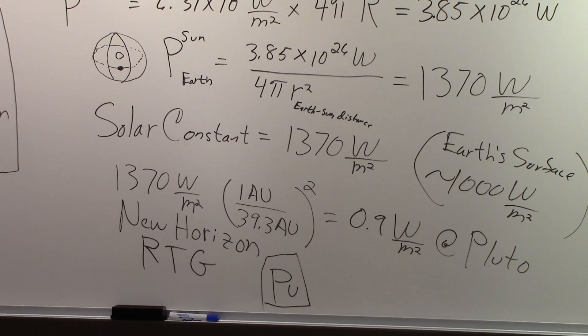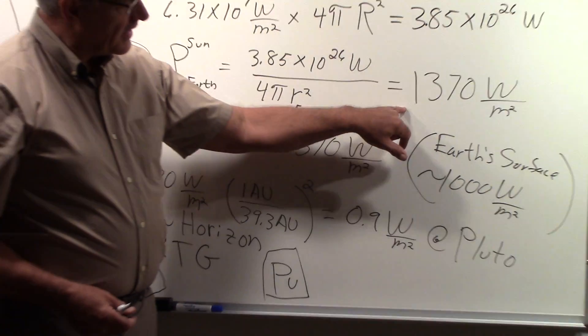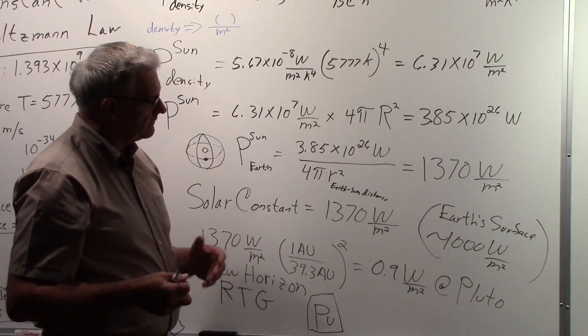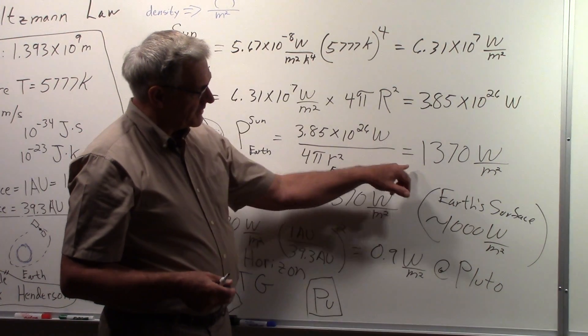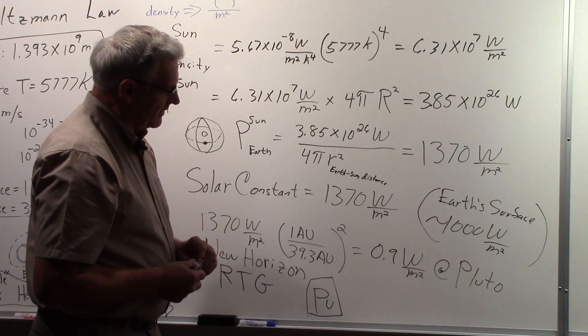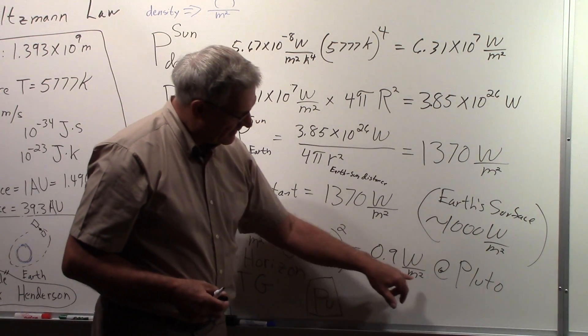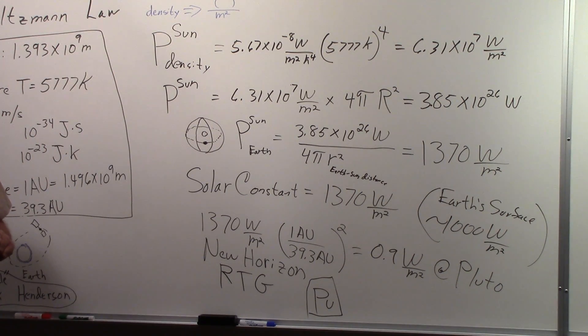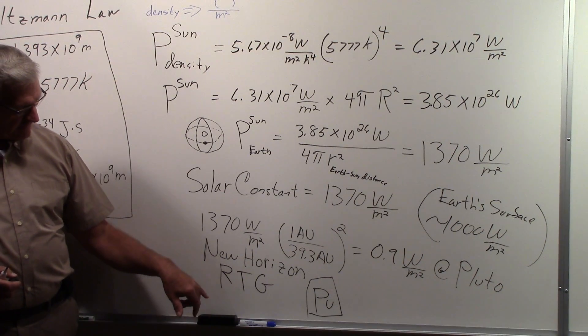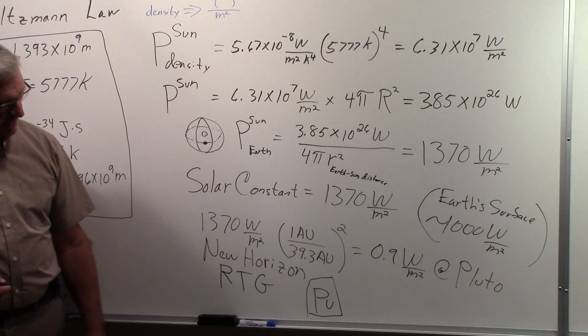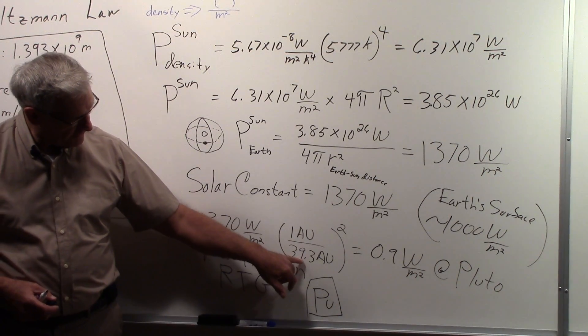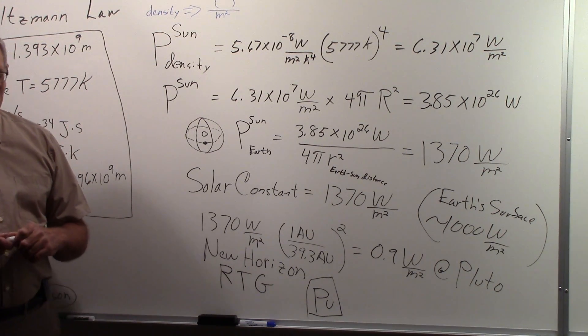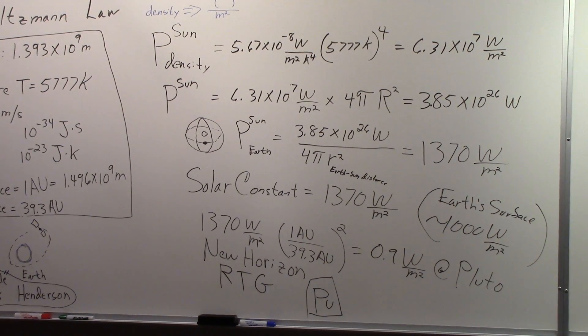So just to summarize it again, at the earth, the solar constant is 1,370 watts per meter squared. And solar cells work well at the distance of the earth from the sun because that's a decent number. But out at Pluto, it's too weak, so you have to use some other sort of power source. And the radioisotope thermoelectric generator is the way to generate that power all the way out at 39.3 astronomical units at Pluto. So that's the story on the solar constant.